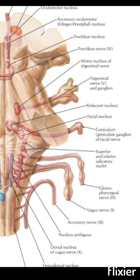The lateral group supplies the buccal musculature and the buccinator muscle. The intermediate group supplies the orbicularis oculi, the muscles of the forehead and the upper face. The medial group is again subdivided into dorsomedial and ventromedial. The dorsomedial supplies the auricular muscles and the occipitofrontalis muscle.